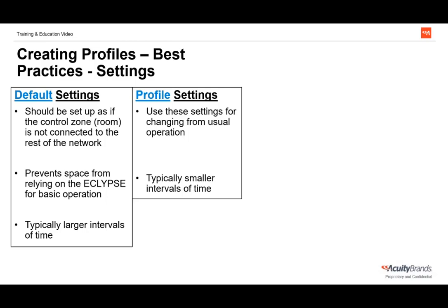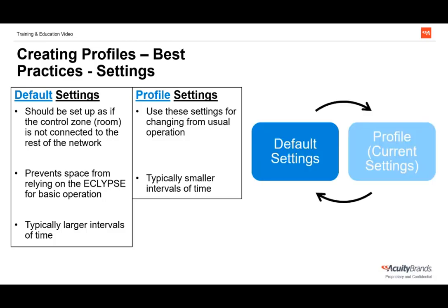Once we know how we want the system to operate and when, we're ready to associate these behaviors with settings in our profile. When creating profiles, remember that profiles simply change current settings values, so we need to decide which values should be saved as default settings and which should only be changed with a profile. Default settings should be programmed as if the control zones are not connected to the rest of the nLight network, ensuring the space operates as intended regardless of time clock functionality. Default settings also tend to cover larger chunks of time, while profiles handle temporary changes — usually smaller time intervals, often after hours.